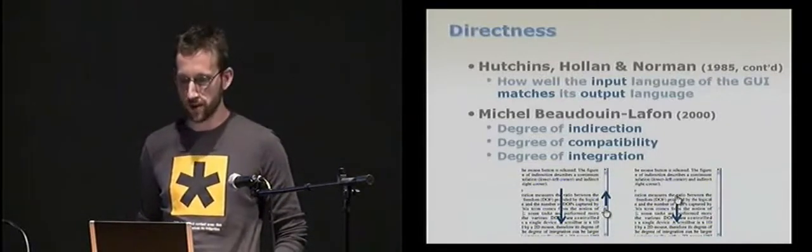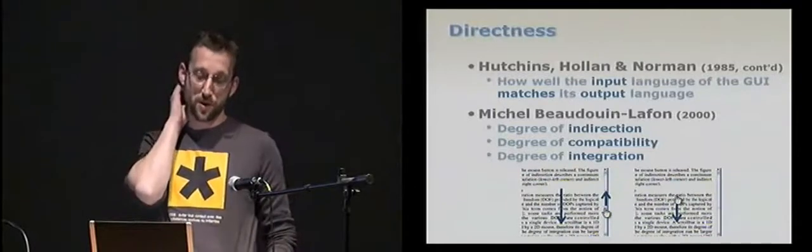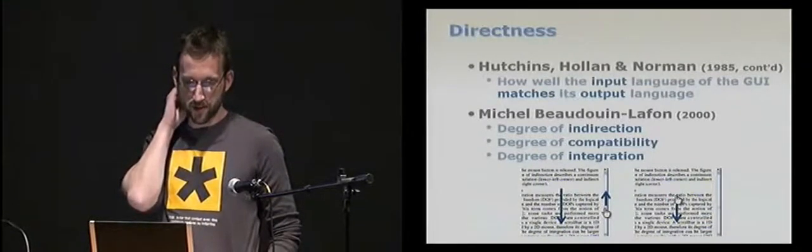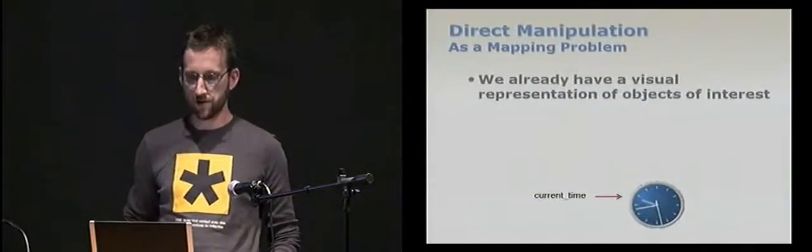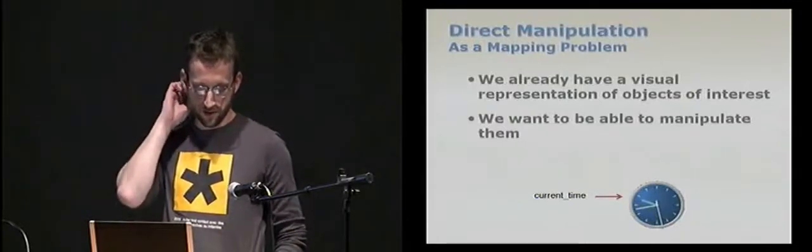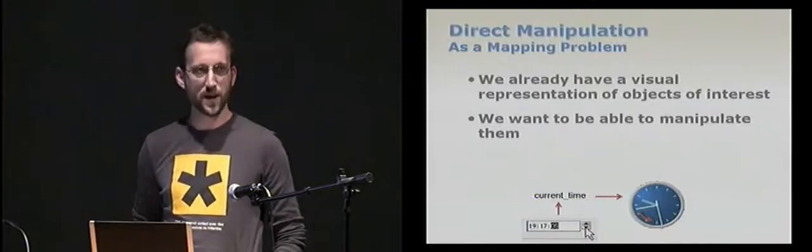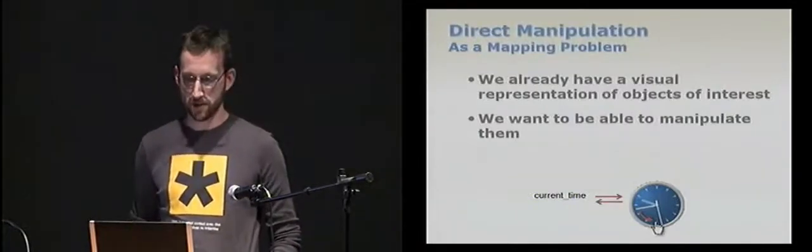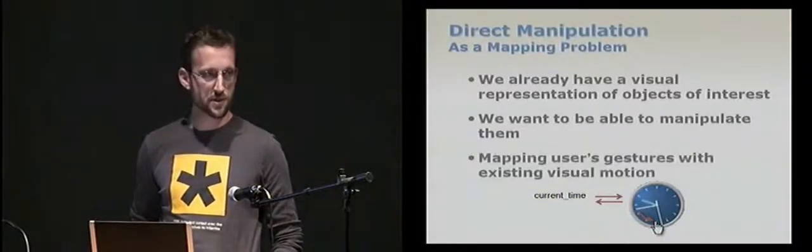is something which is dependent on how well the input language of the user interface matches its output language. And this has been further refined by Michel Beaudouin-Lafon, who introduced three types of indirectness. So if you are using a scroll bar to find a document, for example, you have a spatial indirection, and you have a low compatibility between your gestures and the motions you give to the document. And my point is that designing for direct manipulation is very often a problem of matching gestures with motions. So imagine you have a visual representation of an object of interest, such as a clock representing time, and you want the user to be able to manipulate that object. So according to the standard MVC paradigm, you will add a widget which will allow the user to modify time, and each modification of the time will be reflected as a motion on the visual representation. But the most direct way of doing this is to letting the user directly specify the expected motions.